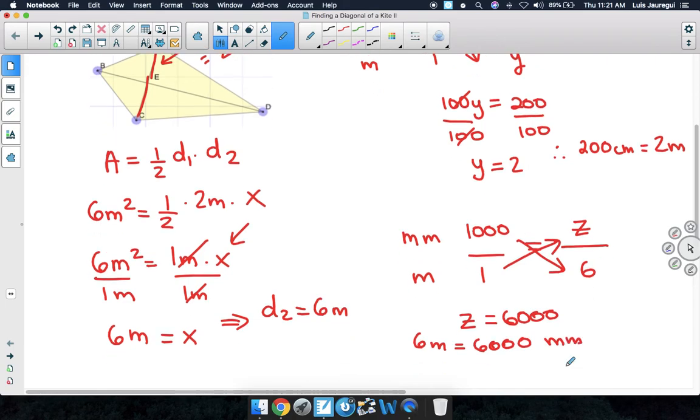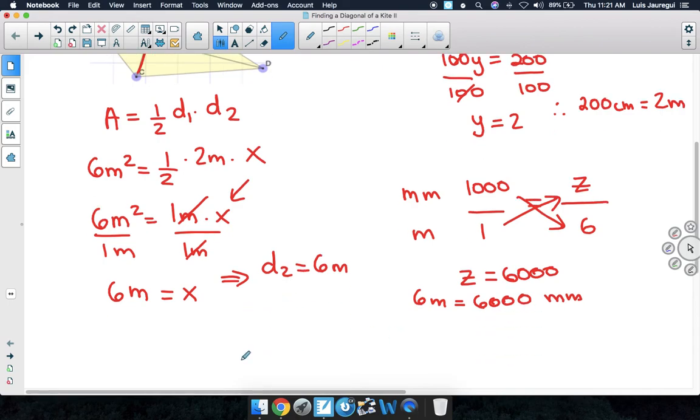We can conclude by saying that the actual length of diagonal BD is 6,000 millimeters. Therefore, BD is equal to 6,000 millimeters.